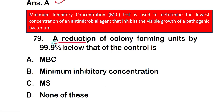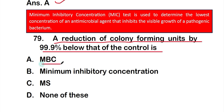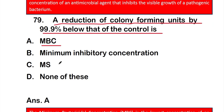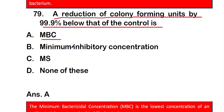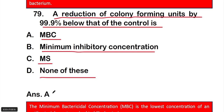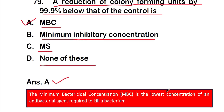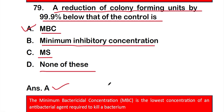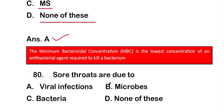Question 79: Reduction of colony-forming units by 99.9% below that of the control is — option A: MBC (minimal bactericidal concentration), option B: minimal inhibitory concentration, option C: mass spectrometry, option D: none of the above. The right answer is option A, MBC — minimal bactericidal concentration. The minimal bactericidal concentration is the lowest concentration of an antibacterial agent required to kill a bacterium.